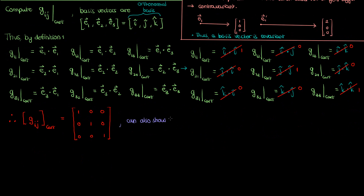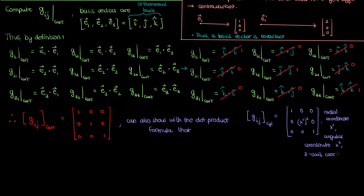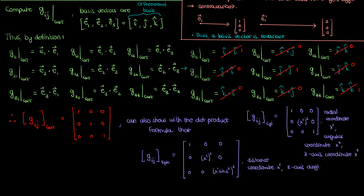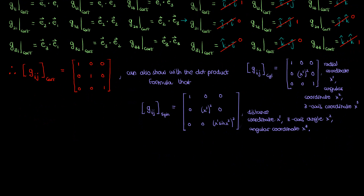I'll now invite the viewer to use this dot product formula to show that the metric tensors in cylindrical and spherical coordinates are given by these expressions, where I've specified the meaning of x super 1, x super 2, and x super 3 for each coordinate system. You can arrive at these expressions by expressing the basis vectors in each coordinate system in terms of i-hat, j-hat, and k-hat, and then taking their dot products. I've left that as an exercise since it's just algebra and won't really add to your understanding of the metric tensor.